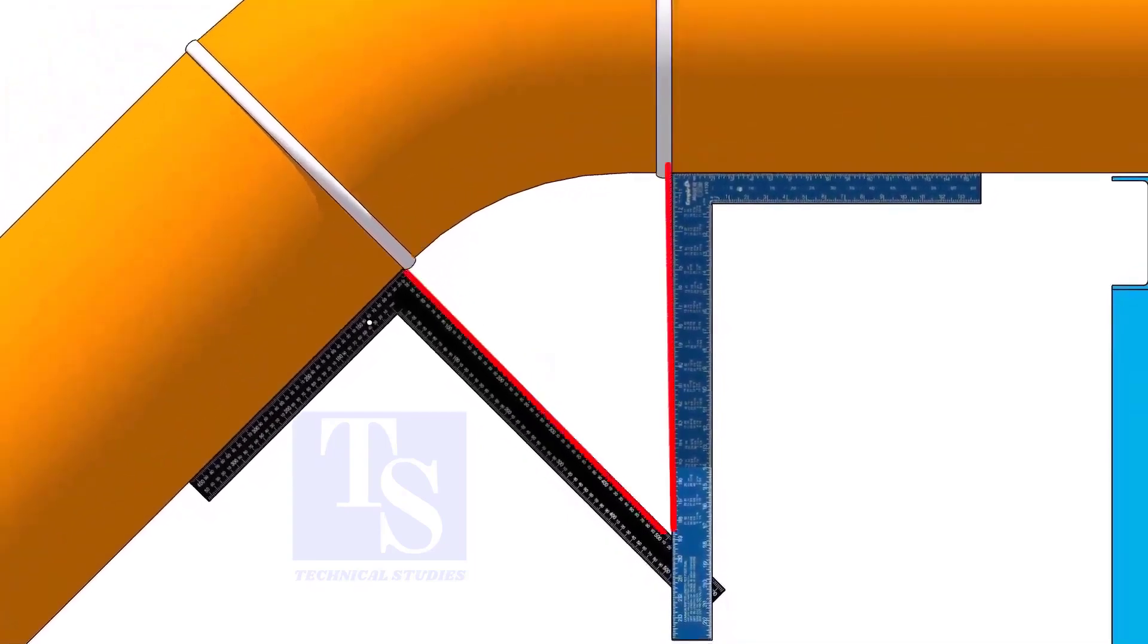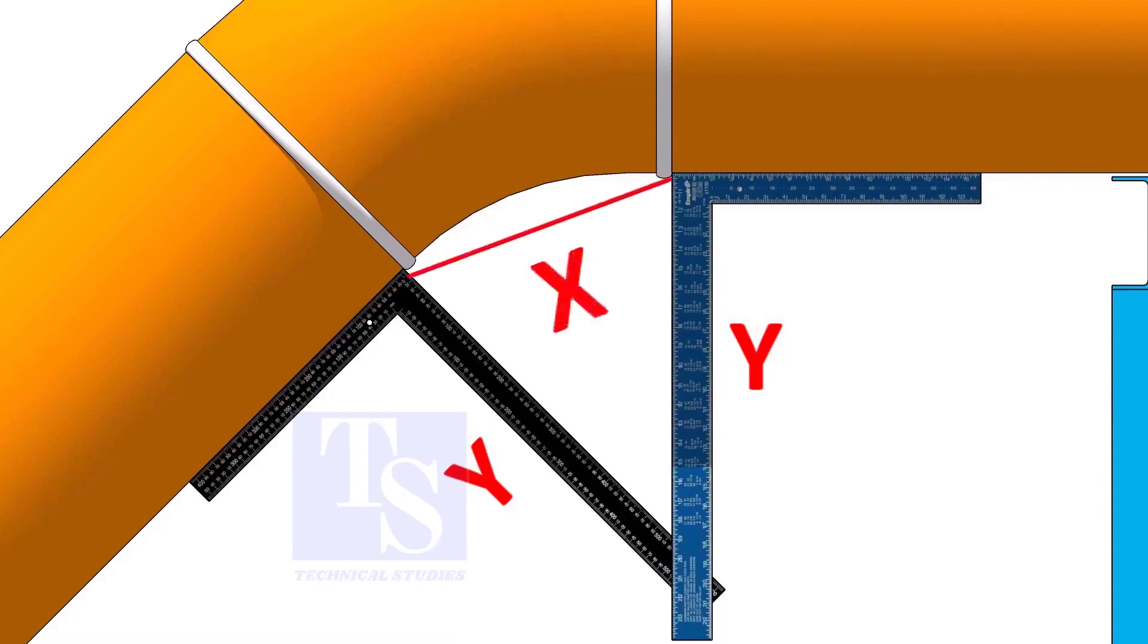Measure the distance from the pipe to the point where the right angles bisect each other. Measuring only one side is enough. Now, carefully measure the distance between the corners of the right angles.